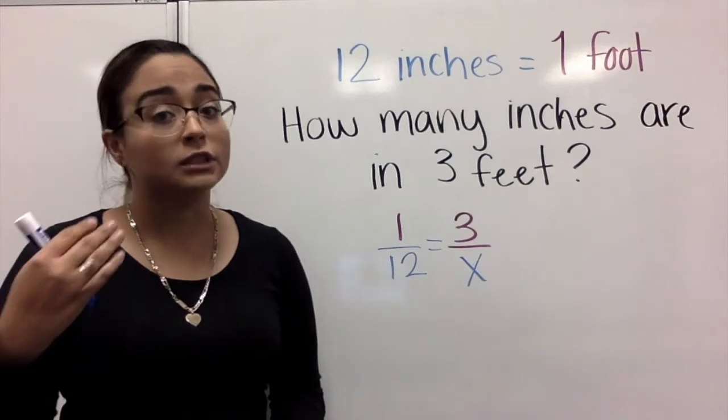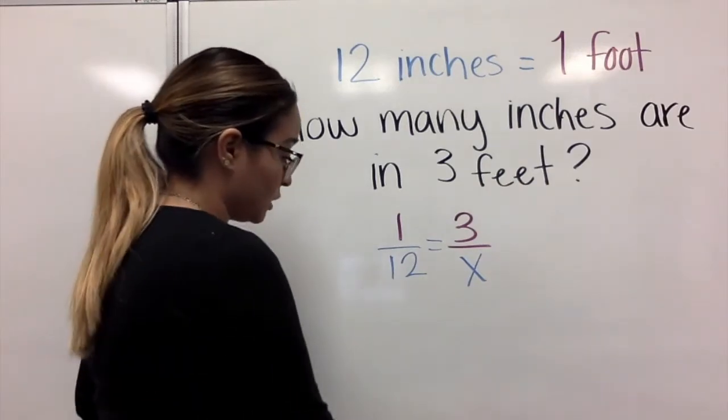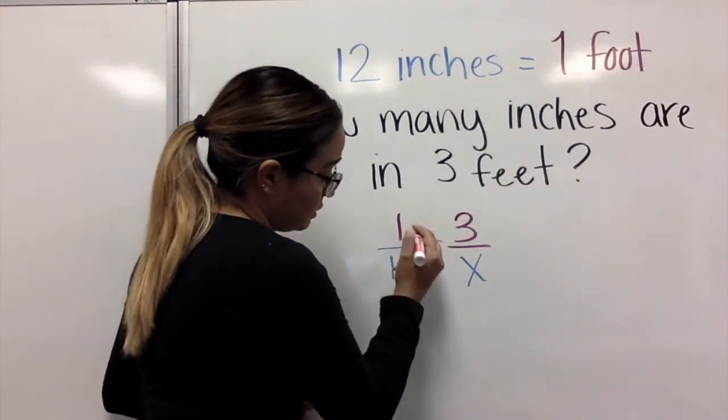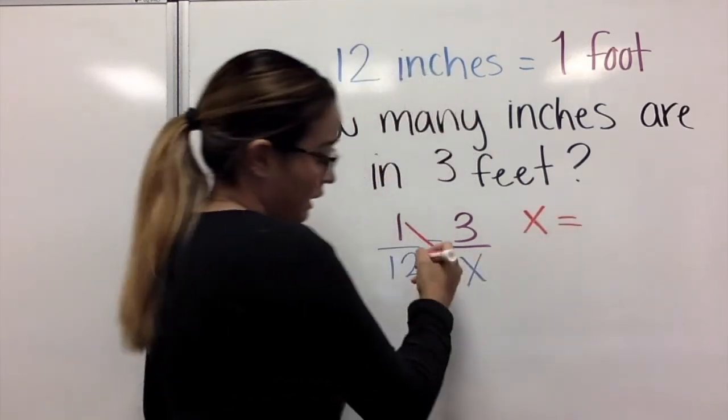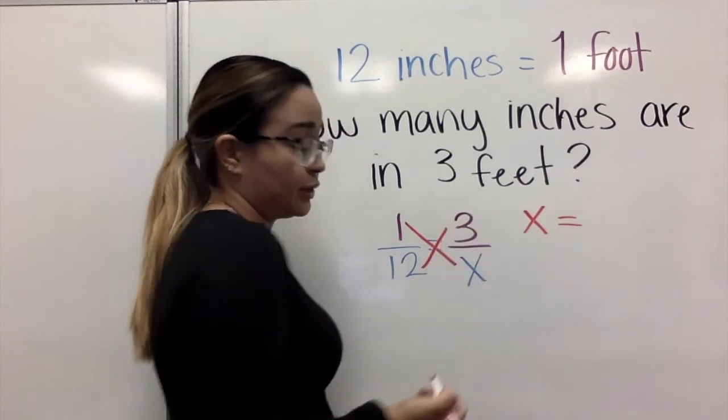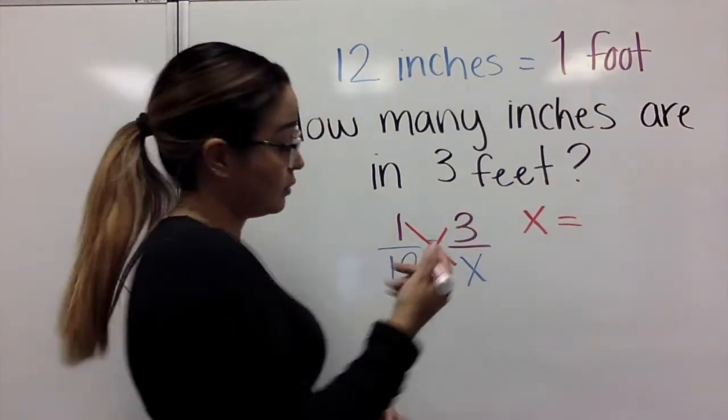And again, we're going to go in with bowtie and cross multiply. One times x equals x. And then twelve times three equals thirty-six.